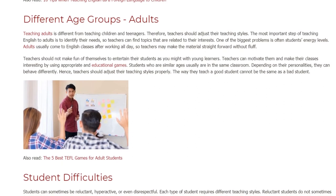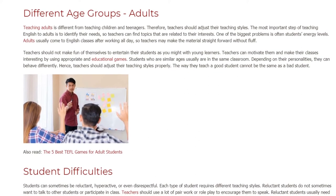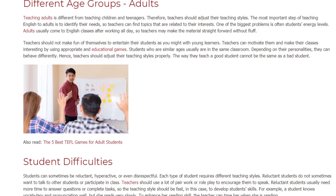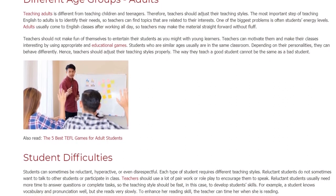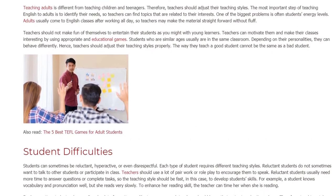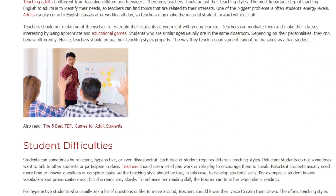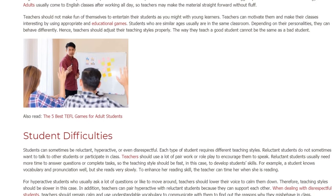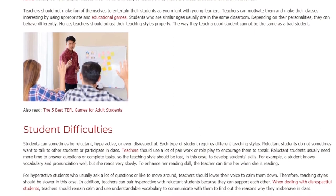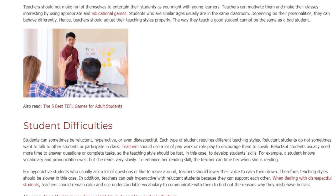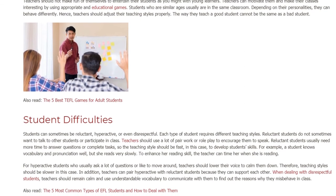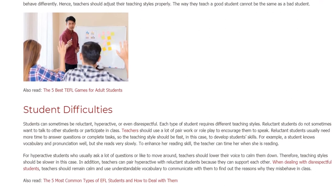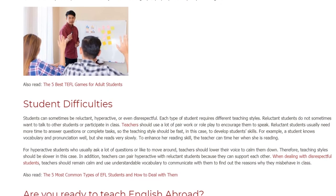Reluctant students do not sometimes want to talk to other students or participate in class. Teachers should use a lot of pair work or role play to encourage them to speak. Reluctant students usually need more time to answer questions or complete tasks, so the teaching style should be fast in this case to develop students' skills. For example, a student knows vocabulary and pronunciation well, but she reads very slowly. To enhance her reading skill, the teacher can time her when she is reading.